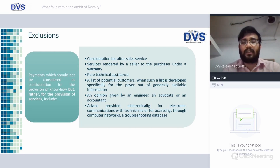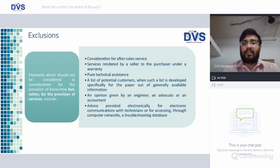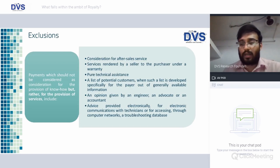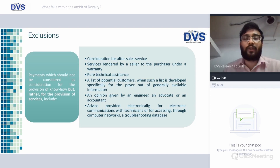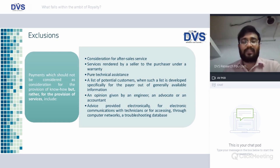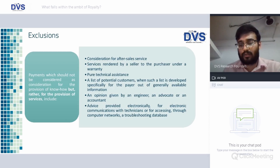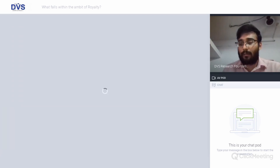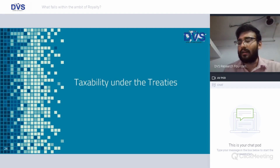Examples of payments that fall outside royalty as service payments include: consideration for after-sales services rendered by a seller to the purchaser under a warranty; pure technical assistance; a list of potential customers developed specifically for the buyer out of generally available information; an opinion given by an engineer, lawyer, or accountant; advice provided electronically or via electronic communications with technicians; accessing through computer networks or troubleshooting a database. If the consideration is for the provision of services, it falls outside the ambit of royalty and may be taxable under FTS.